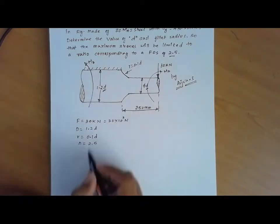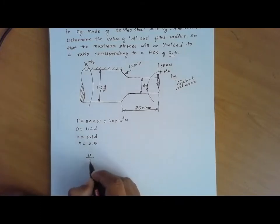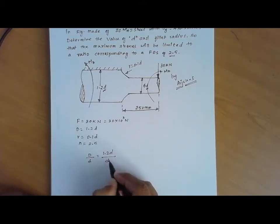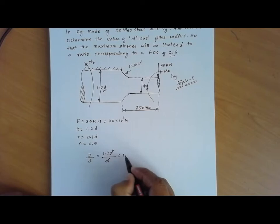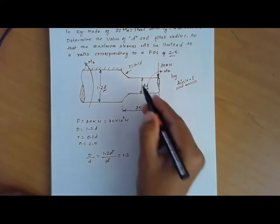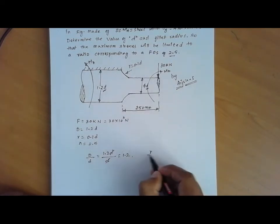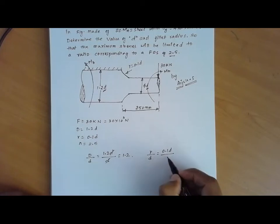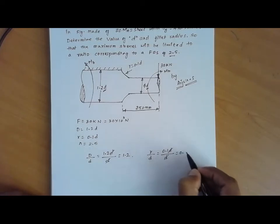From the diagram we can find the ratio of capital D to small d and R to d. Capital D is 1.2D and small d is D, so this ratio D/d equals 1.2. Similarly, R/d: R is 0.1D and d is D, so R/d equals 0.1.